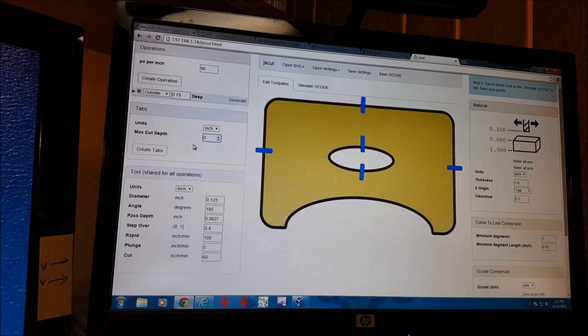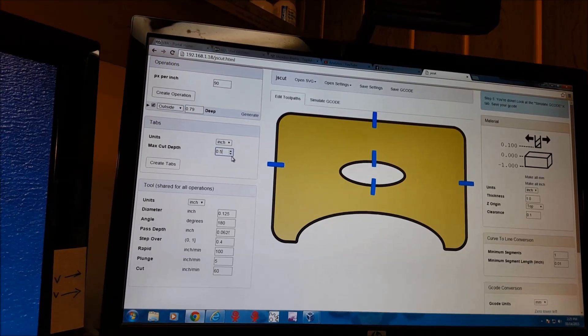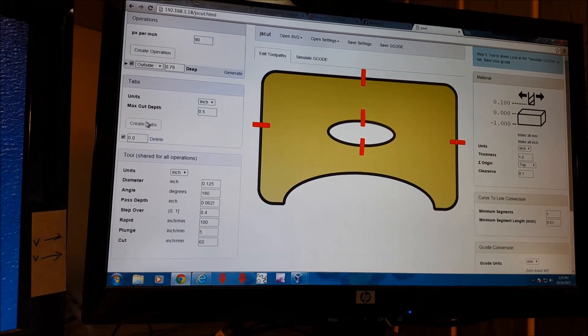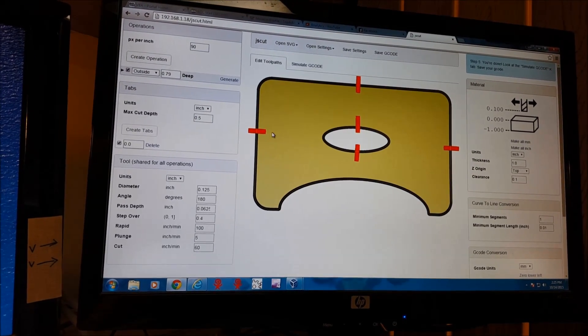This window is for the depth of your tab cut. 0.5. Create tabs. They go red when they've been created.